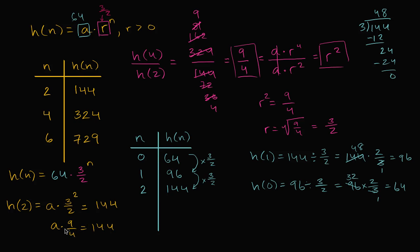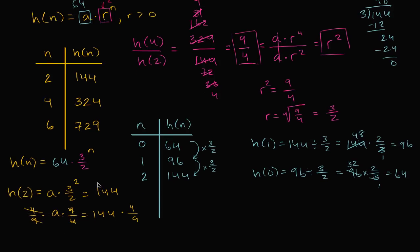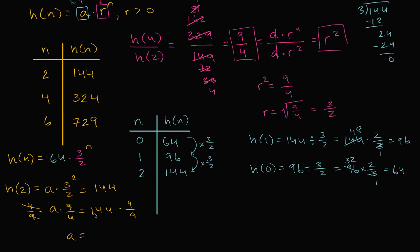And so we could say a times 9 over 4 is equal to 144. And so we can multiply both sides times the reciprocal of 9 over 4, so we multiply both sides times 4 over 9. That cancels with that, and we are left with a is equal to, well, 144 divided by 9 is going to be 16, and then 16 times 4, so this is going to be 16 times 4 is 64, which is exactly what we got before.